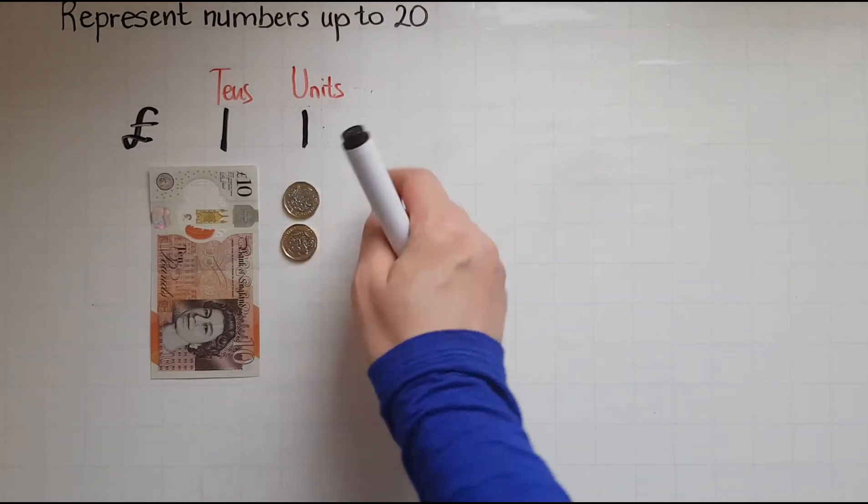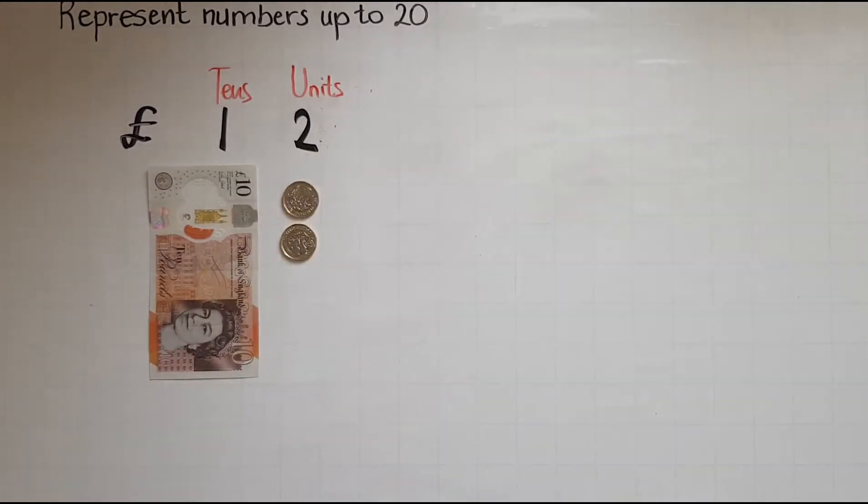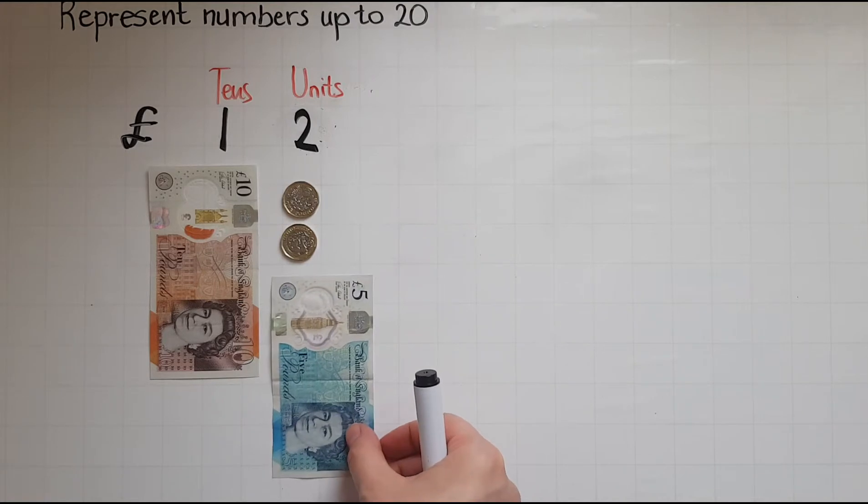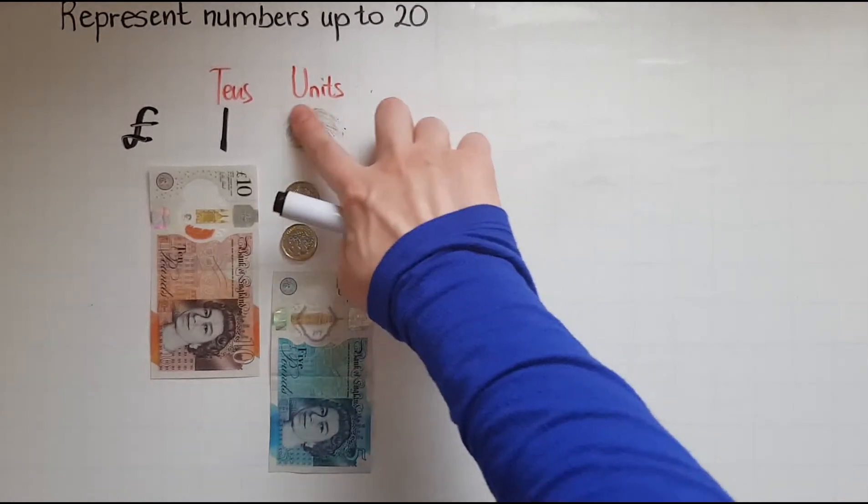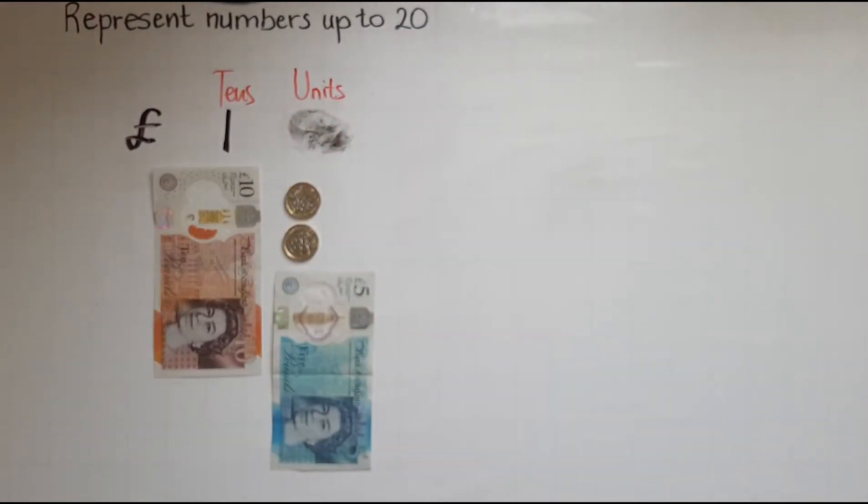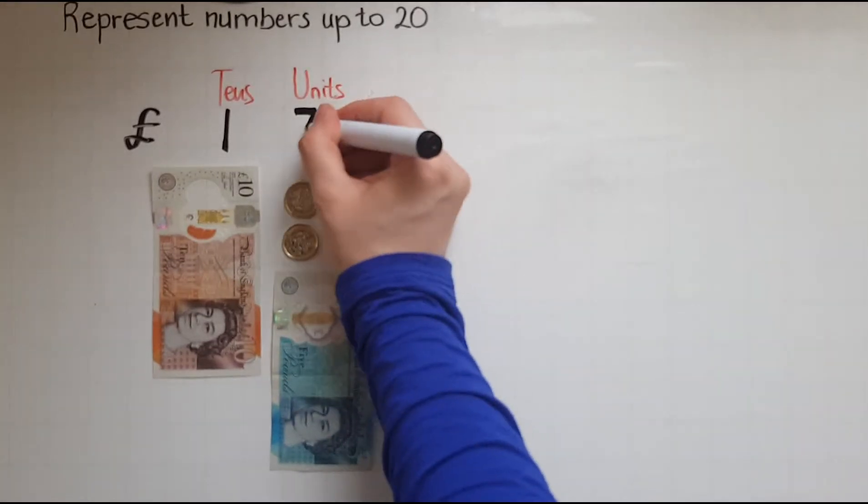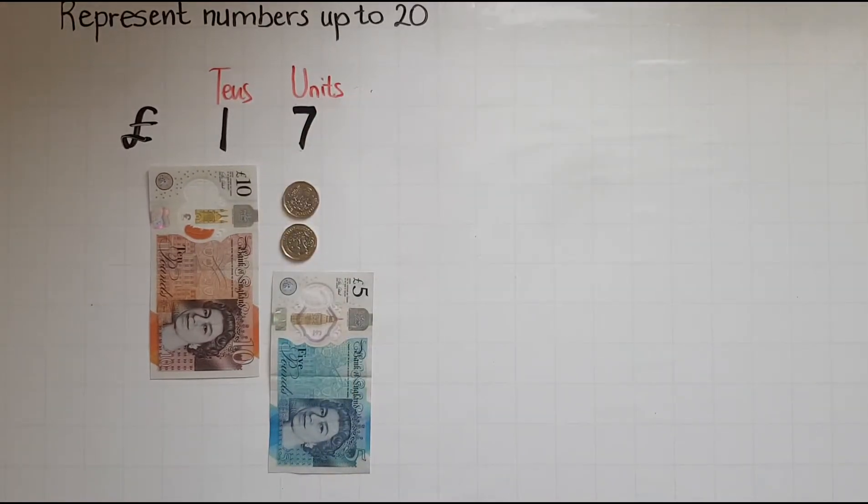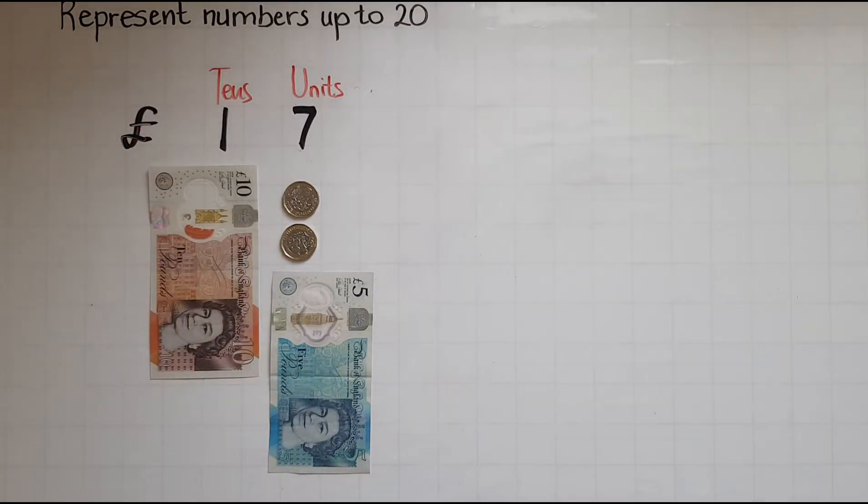Now I have twelve and I have now seventeen. So that needs to change to seven. So the units have changed to seven whereas the tens haven't changed. I haven't added any ten pounds or ten pound notes there.